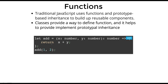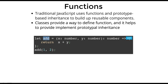Traditional JavaScript functions use prototype-based inheritance. Classes provide a way to define functions and implement prototypal inheritance — though classes are just syntactic sugar that indirectly use function prototypes. Looking at this code, we use arrow functions: for the add variable, I defined types for X and Y, and this method returns a type number. This is clear — I cannot allow this function to return anything other than a number. We will look at TSLint validations in the next video.